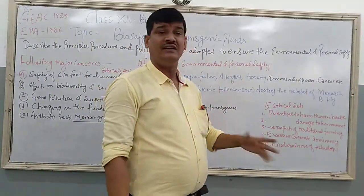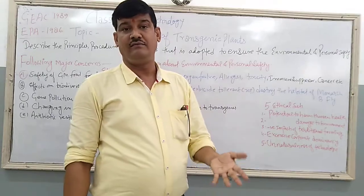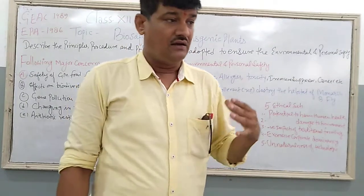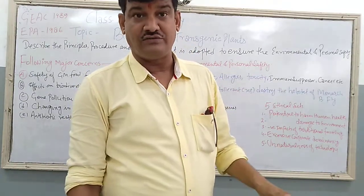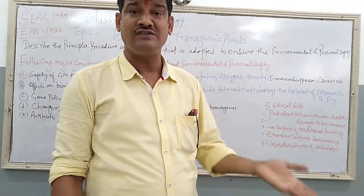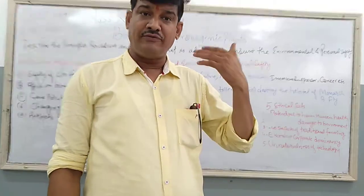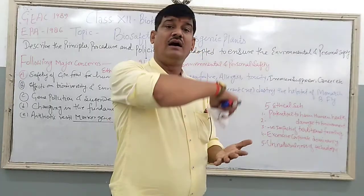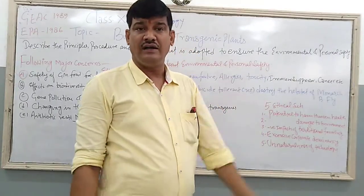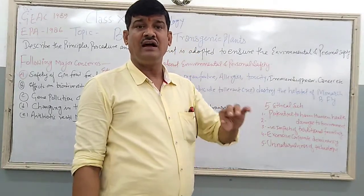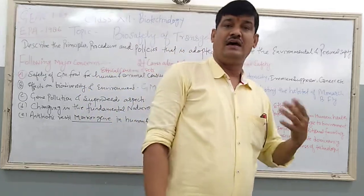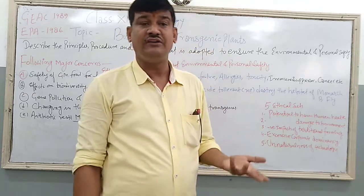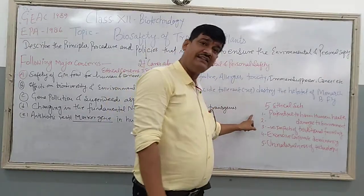Number 2 is the potential to damage the environment. Whatever transgenes are entered into the crop plant, their function is unknown — some genes are still of unknown function. After the entry of these genes into the crop plants, they may have a harmful effect on the environment. They are even responsible for habitat loss and loss of biodiversity.